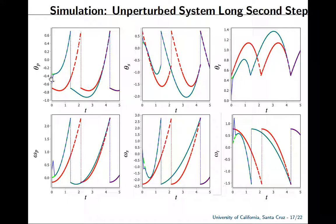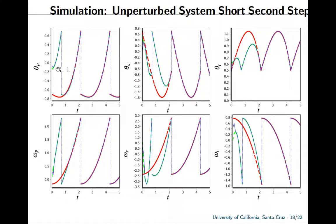In the first simulation, after the first step occurs, the reference system is more than halfway through its current step, so the virtual system uses the impact-to-track time targeting the next reference step and takes a longer second step to converge. In the second case, the first physical step occurs when the reference system is less than halfway through its step, so we can converge at that first reference system step. The physical system tracks the virtual system right away, and after the second step, the virtual system catches up to the reference. After that, we're able to maintain convergence.